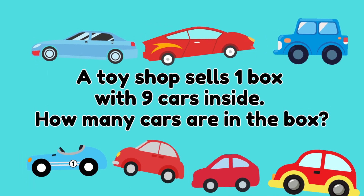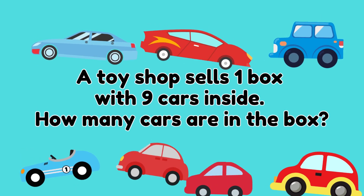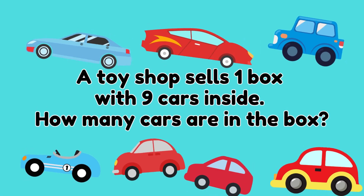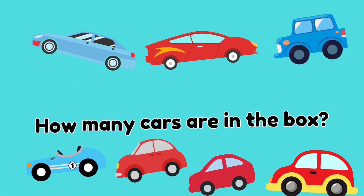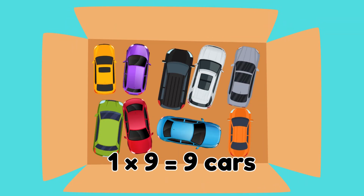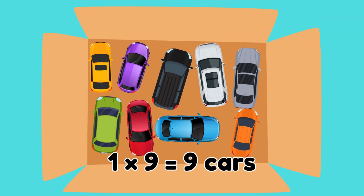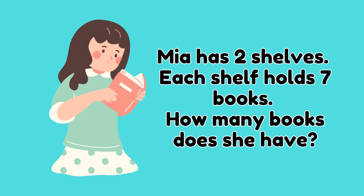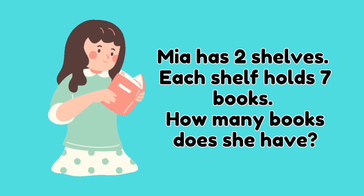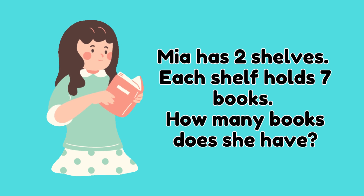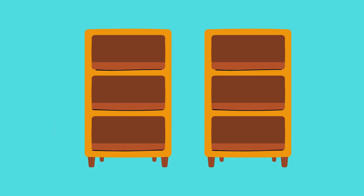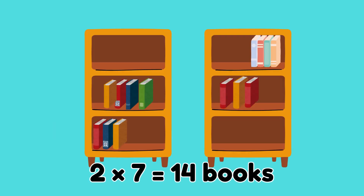A toy shop sells one box with nine cars inside. How many cars are in the box? One times nine is equal to nine — nine cars! Mia has two shelves. Each shelf holds seven books. How many books does she have? Two times seven is equal to fourteen — fourteen books!